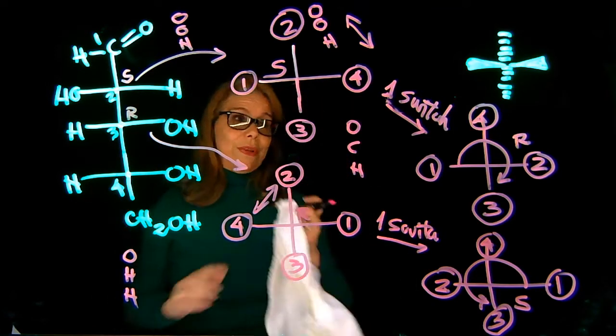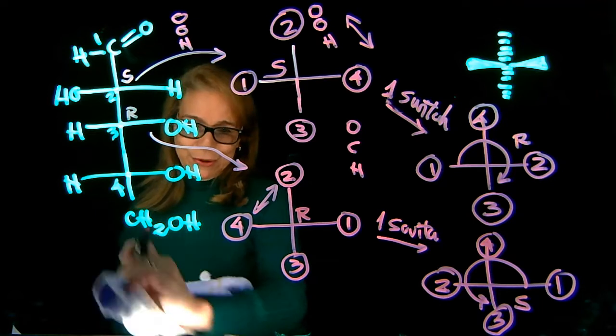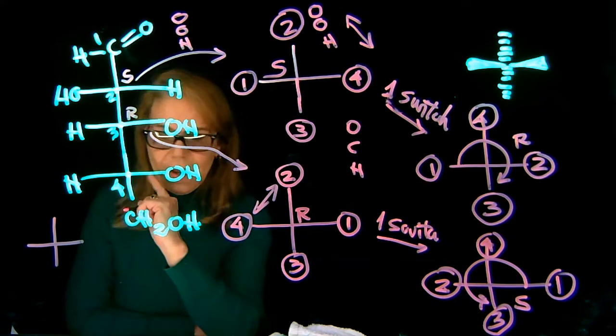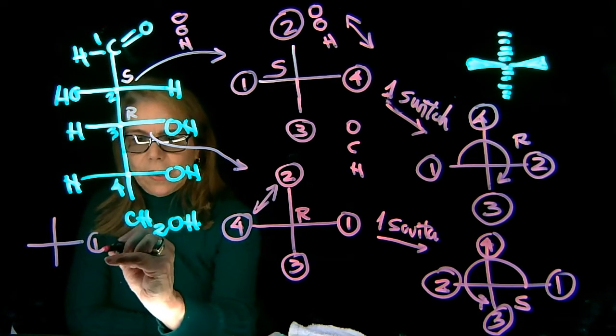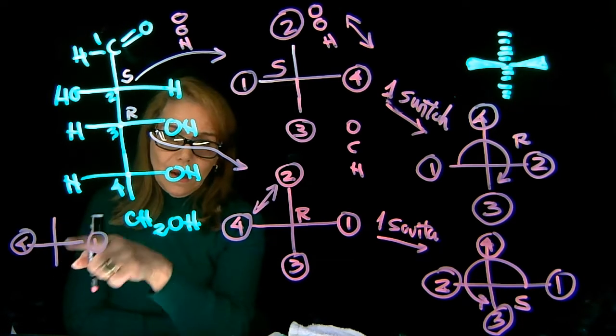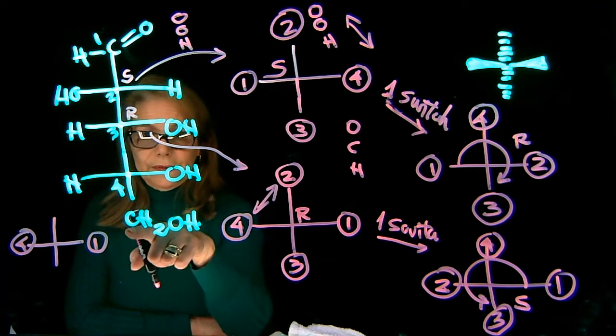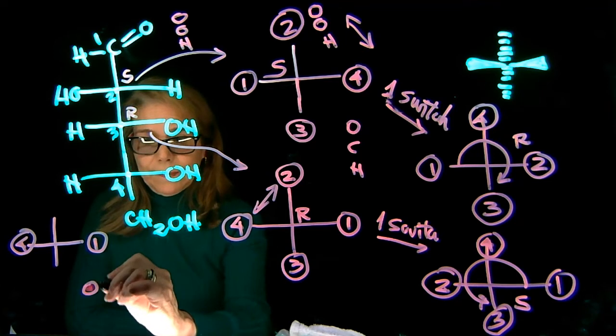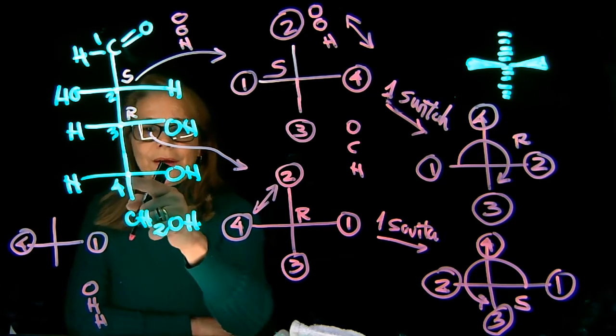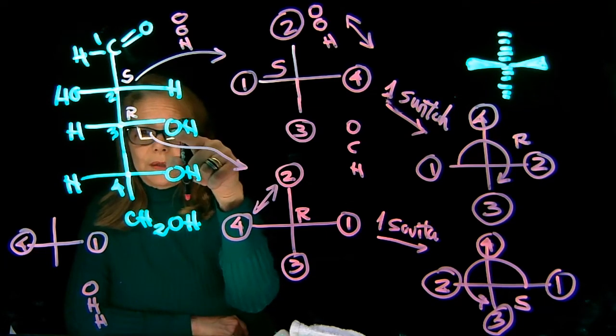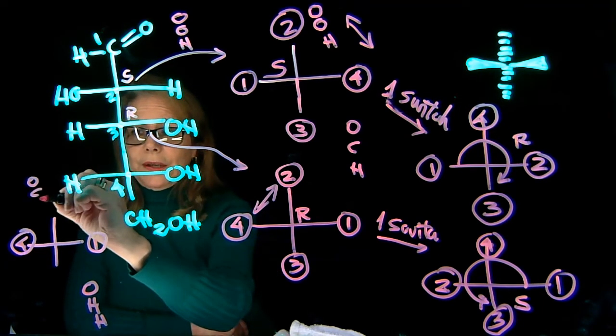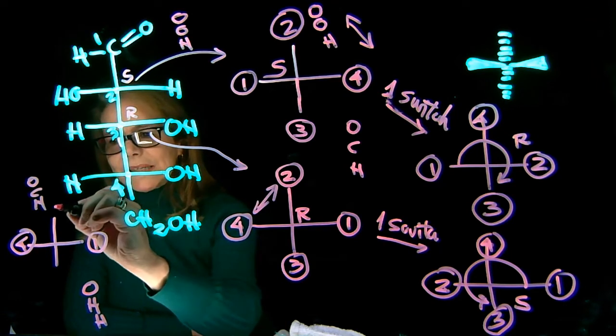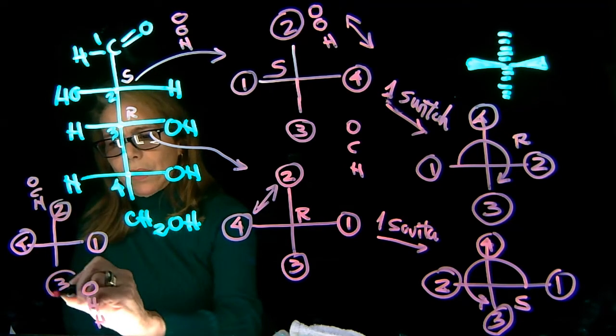Now I need to do the third. Let's draw the last carbon, the one on the bottom. Priority 1 is the OH, priority 4 is the hydrogen. Now I just need to look at this carbon and that carbon. Carbon in the bottom is attached to oxygen, hydrogen, hydrogen. The carbon above has a bond to oxygen, to a carbon, and to hydrogen. So the one in the top has higher priority. That's my second, that's number 2, and that's number 3.